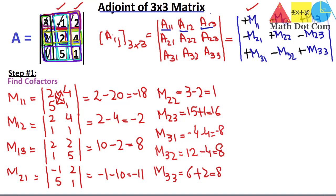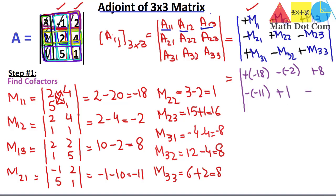We have now found the minors of all elements. Putting these values into the cofactor matrix: +M11 = −18, −M12 = −(−2) = +2, +M13 = +8, −M21 = −(−11) = +11, +M22 = +1, −M23 = −16, +M31 = −8, −M32 = −8, +M33 = +8. This is the cofactor matrix Aij for the 3×3 matrix, completing step one.